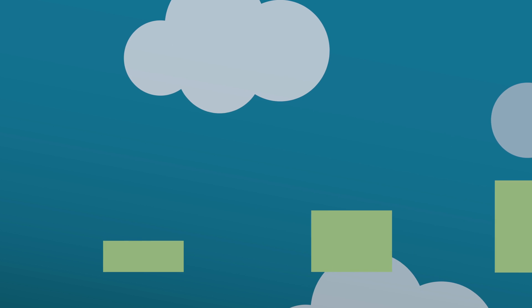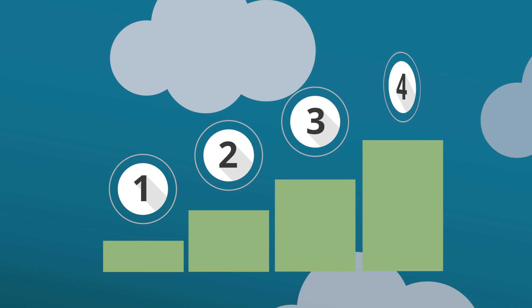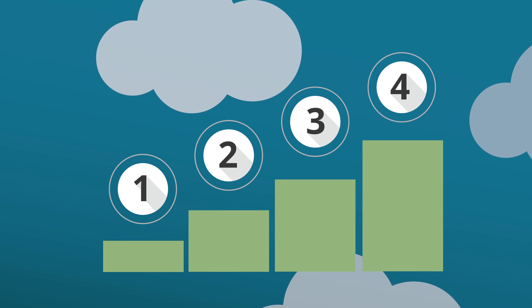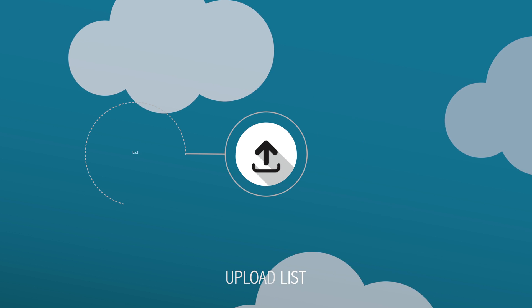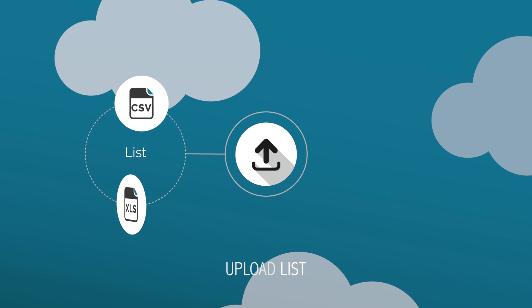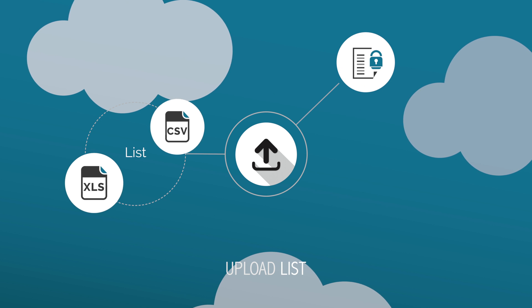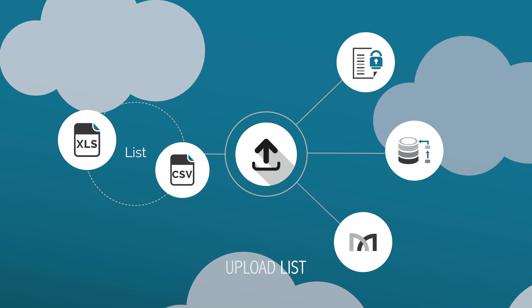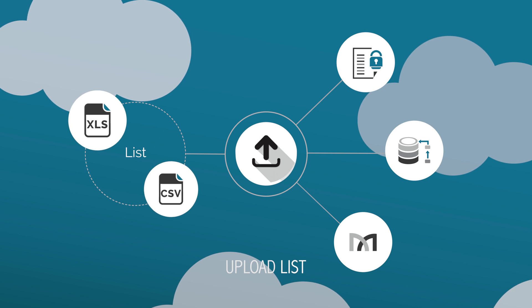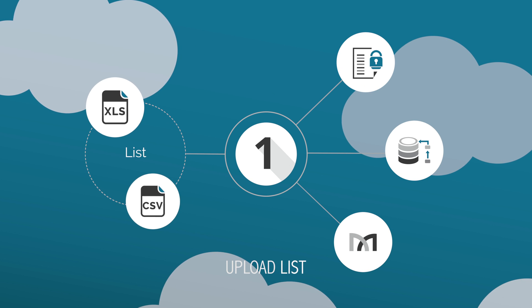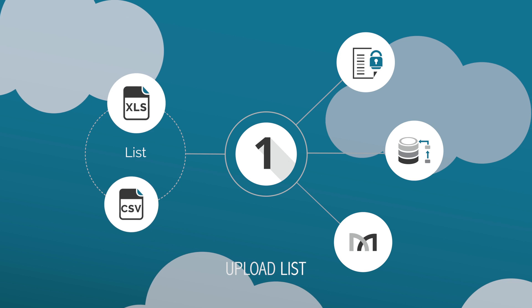Get set up in four simple steps. Step 1: Upload SMS and email marketing lists, including exclusion lists that have been easily integrated with popular file formats.